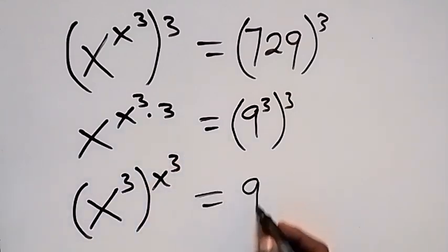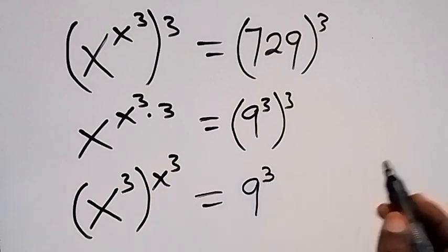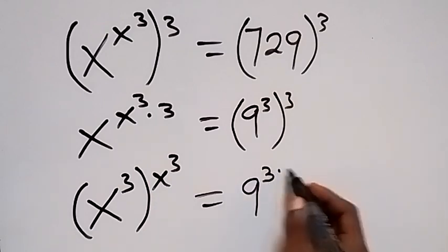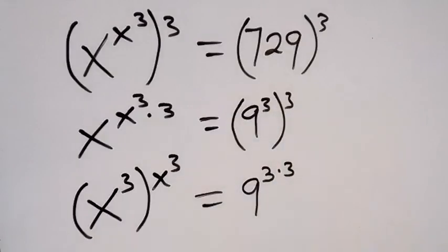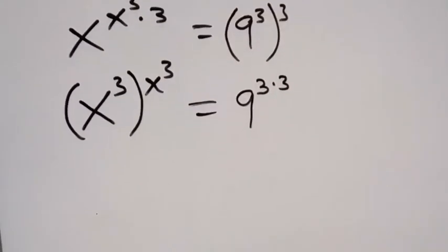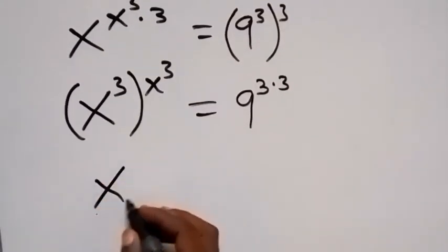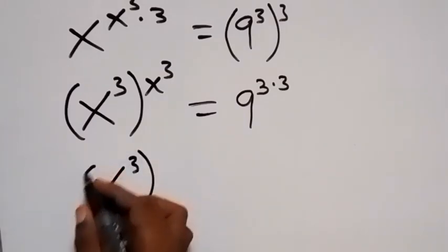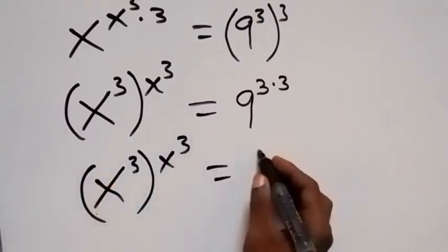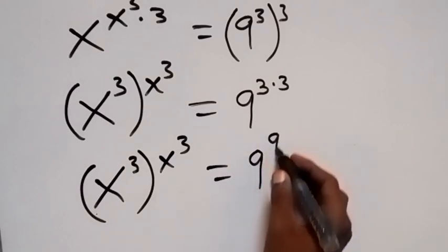This equals 9 raised to power 3 times 3. Since 3 times 3 is 9, we can write X raised to power 3 raised to power X raised to power 3 equals 9 raised to power 9.